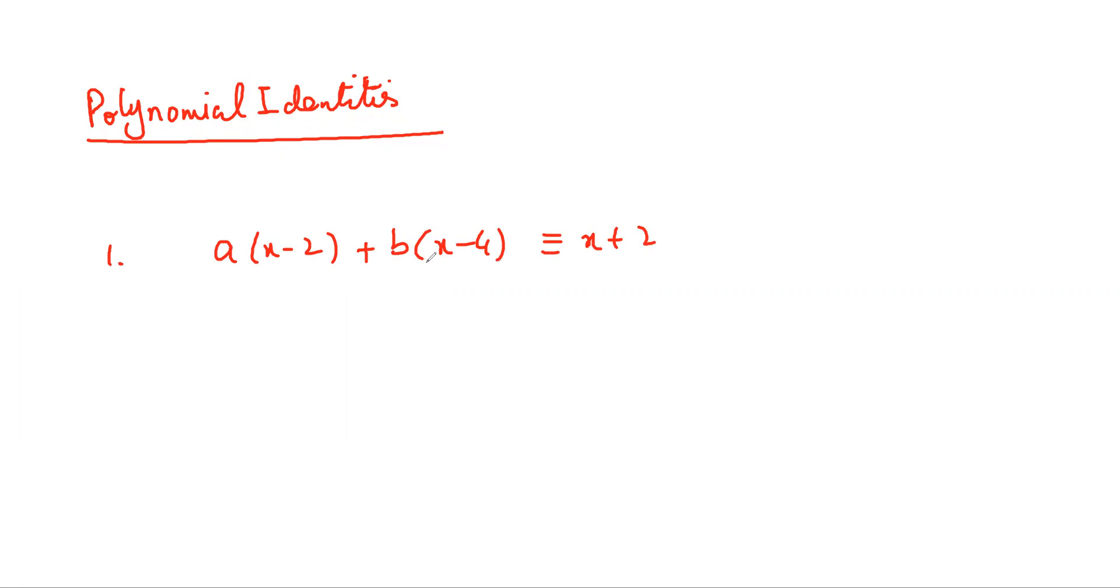You cannot switch the terms from left-hand side to the right-hand side. You cannot solve it. But the thing is, you can put any value of X into it on both the sides. That is the main difference between an identity and an equation.